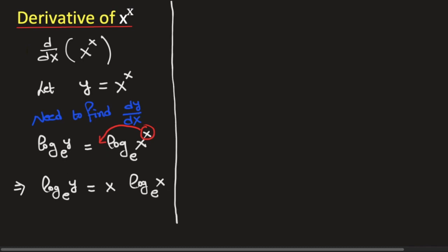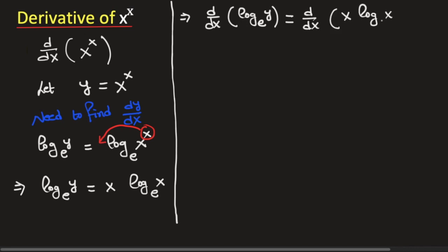Now we will differentiate both sides with respect to x. Thus we have d/dx of ln(y) is equal to the derivative of x times ln(x). Applying the chain rule of derivatives, the left-hand side will be equal to 1 over y times dy/dx. On the right-hand side, we have a product of two functions, so we will use the product rule of derivatives.